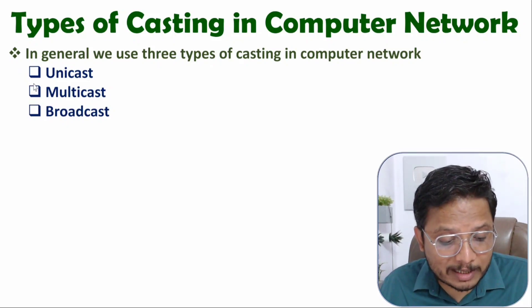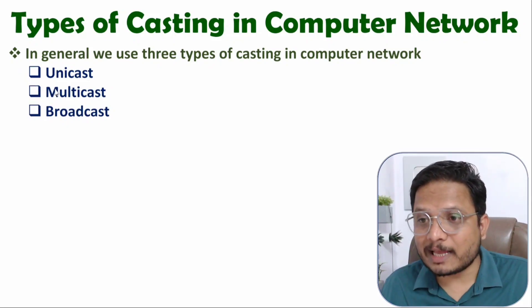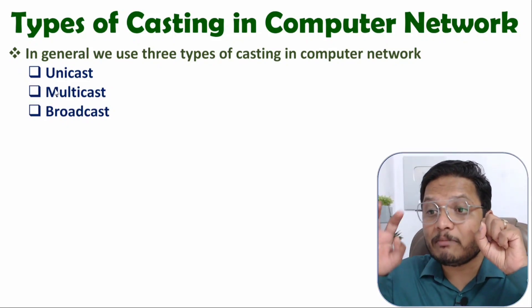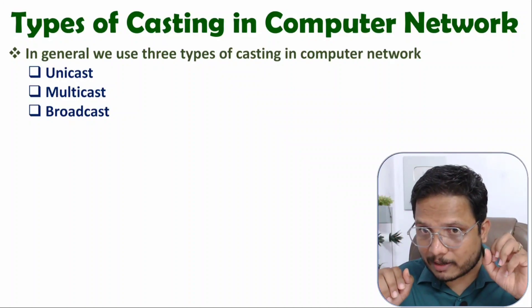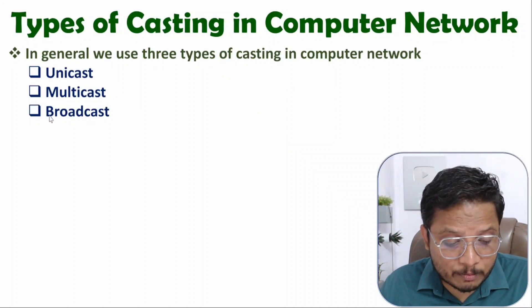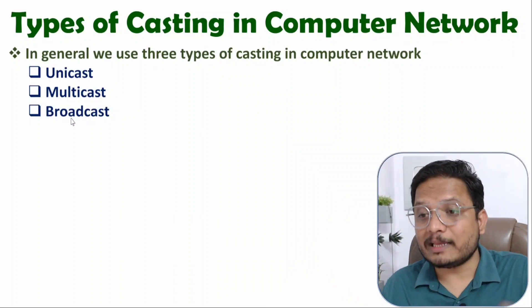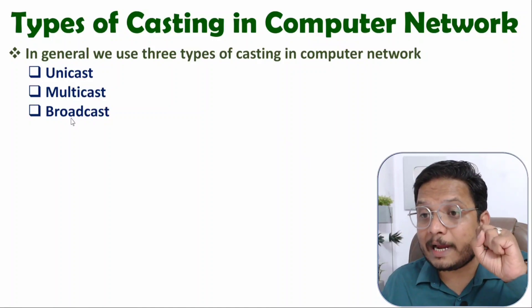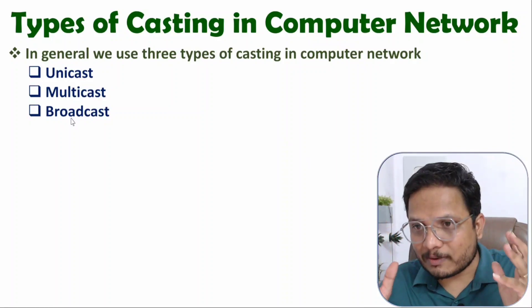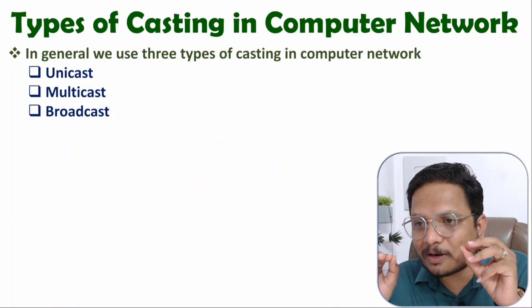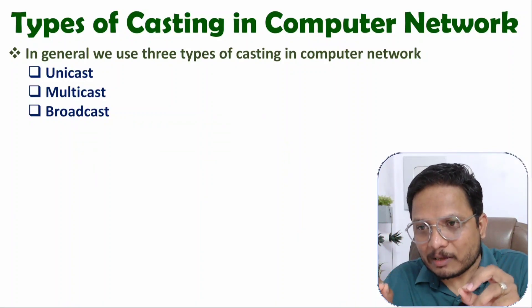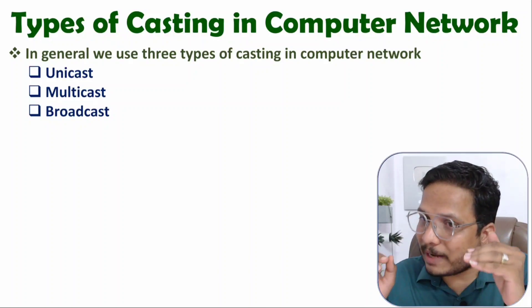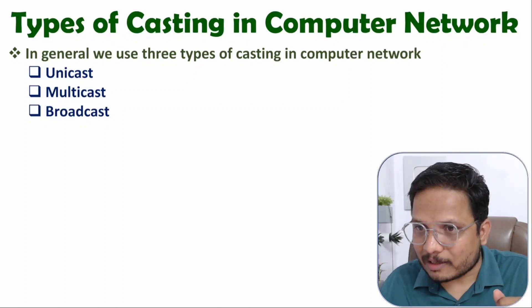When it comes to multicast, there will be one transmitter and multiple receivers. But when it comes to broadcast, there will be one transmitter and all receivers. But that is not that simple — for that you need to understand everything along with a practical example.